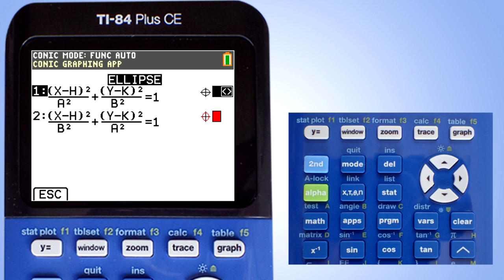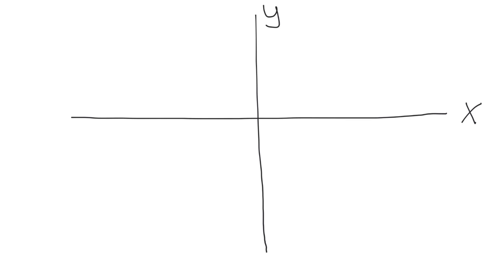Now we see two standard equations for ellipse. The first equation is for a horizontal ellipse and the second equation is for a vertical ellipse. This video covers graphing a horizontal ellipse, but first let's review the parts of a horizontal ellipse. We will work with the X and Y axis.